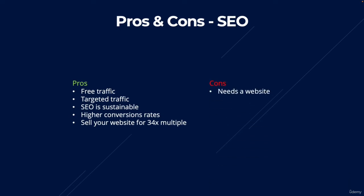What are the cons of SEO? The first con is that you need a website. To rank in the organic section, you can't just use a landing page or send traffic directly to an affiliate offer as you could with Google Ads. The second con is that SEO takes time to kick in, especially on a brand new domain with no trust or authority from Google. Typically it can take six to eight months to generate sustainable results, though it depends on the keywords and competition you're up against.